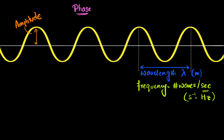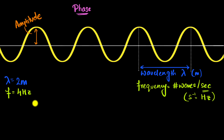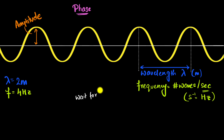Let's take some numbers directly to see how. Say we have a wave with a wavelength of 2 meters and a frequency of 4 hertz. To figure out the speed, let's imagine a wave starts from here and we wait for one second.